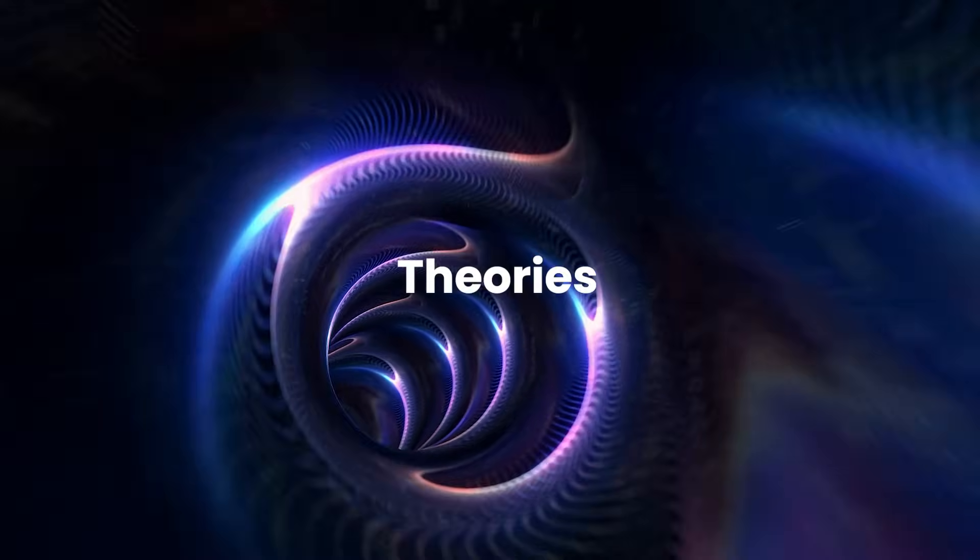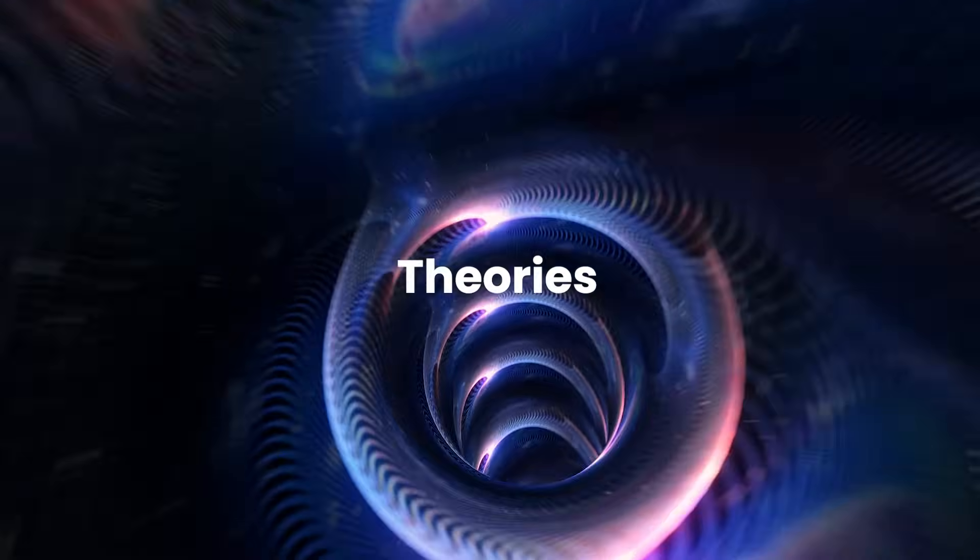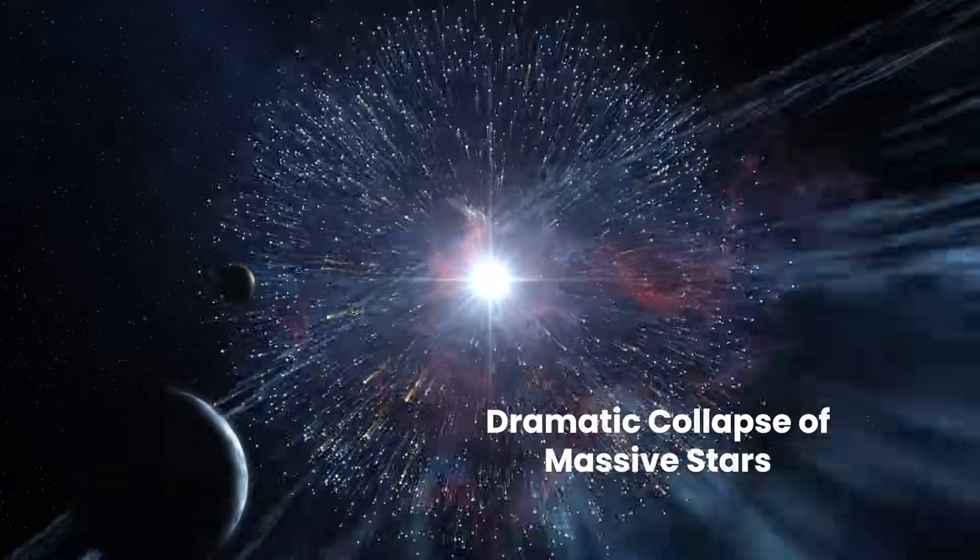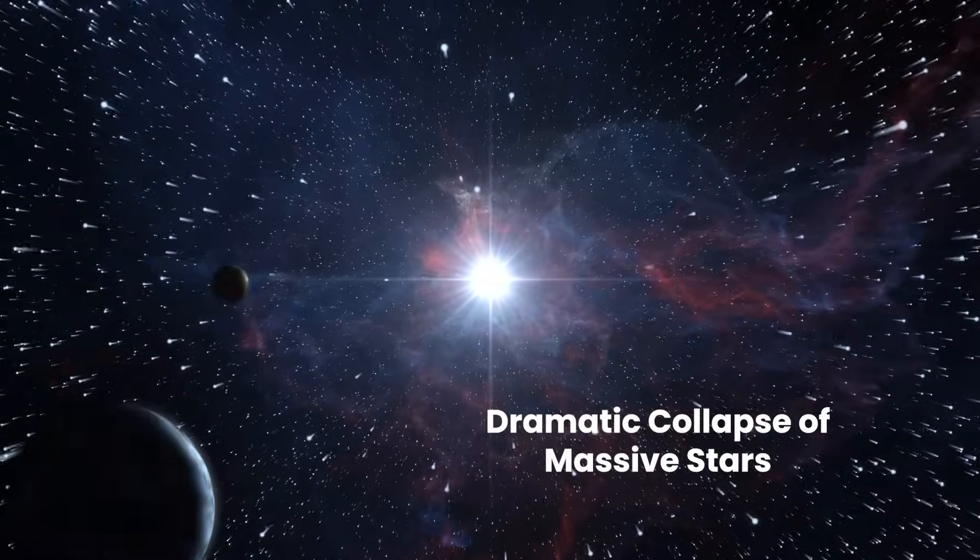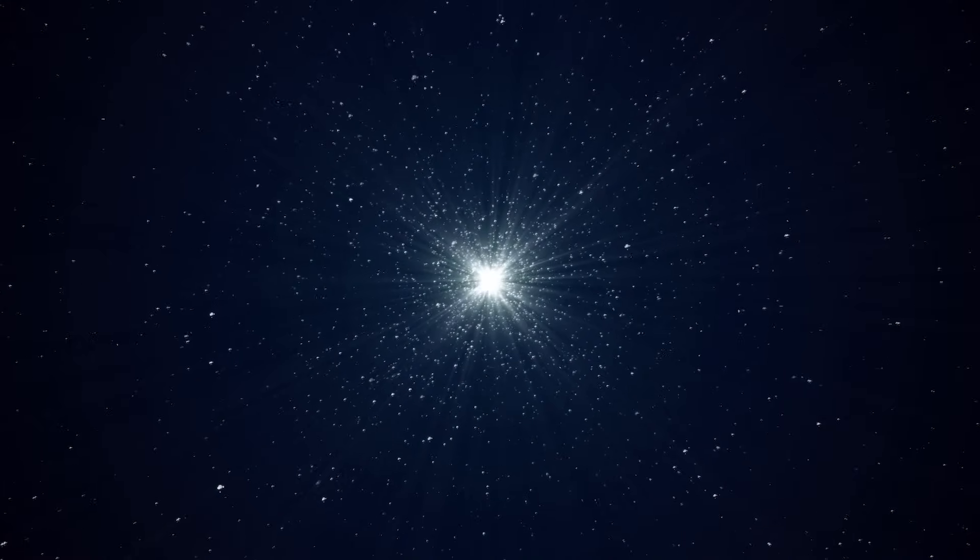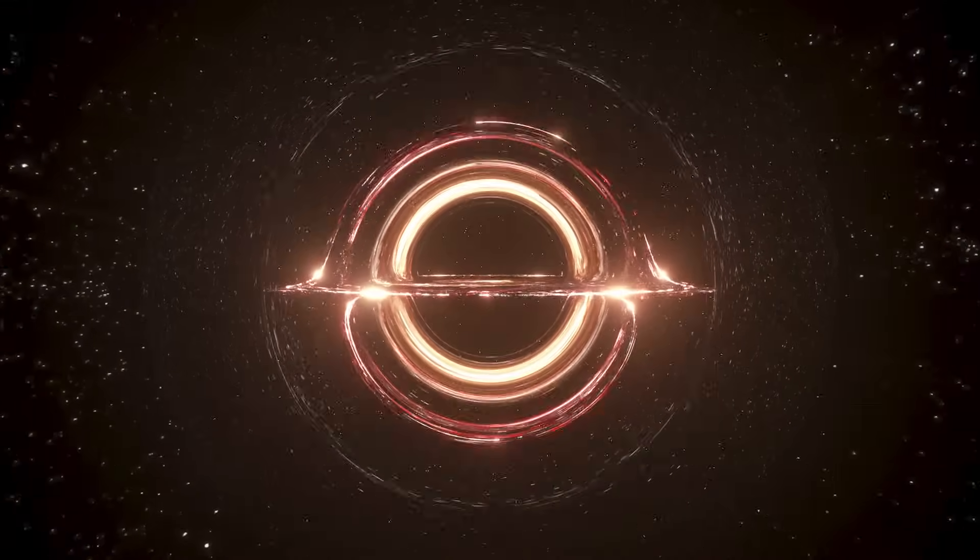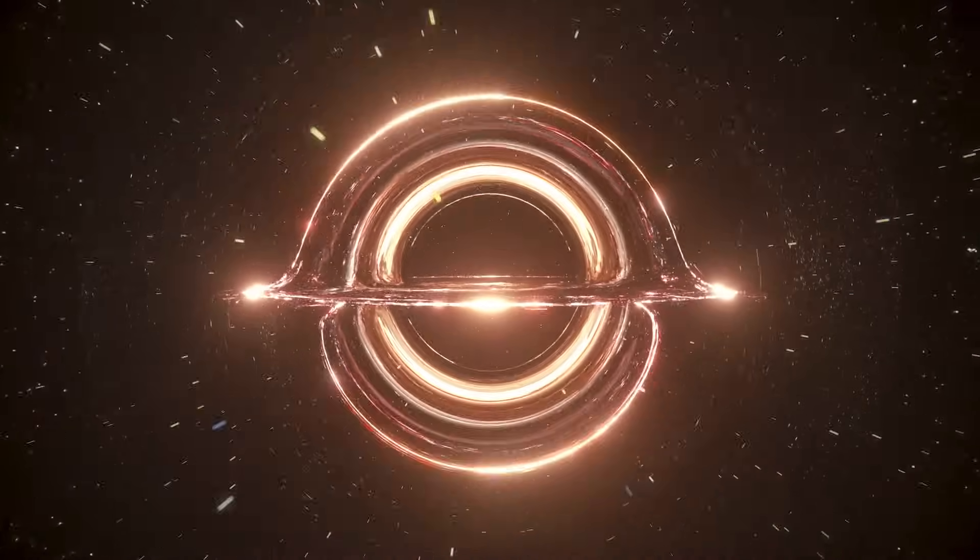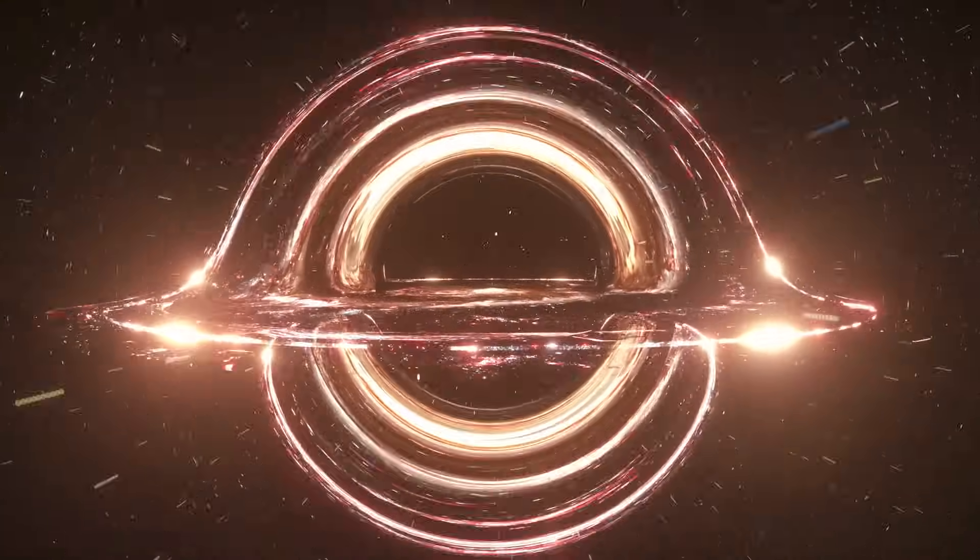Theories. One of the captivating theories surrounding the origin of black holes posits that they form from the dramatic collapse of massive stars. As a star exhausts its nuclear fuel, the outward pressure generated by nuclear fusion diminishes, no longer able to counterbalance the relentless force of gravity pulling inward. This gravitational collapse initiates a cataclysmic event, compressing the star's core to an incredibly dense state.